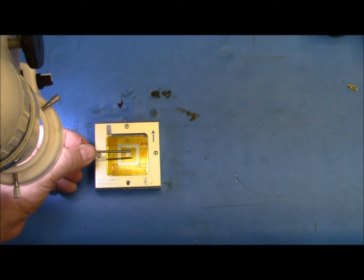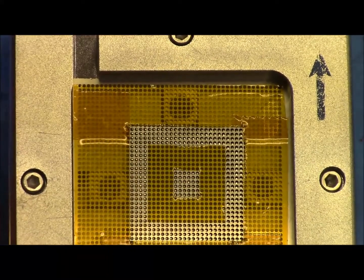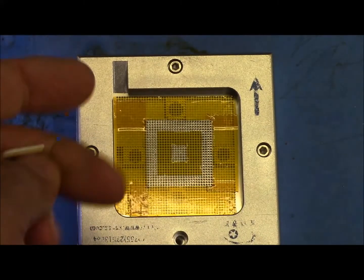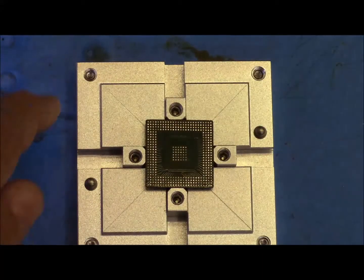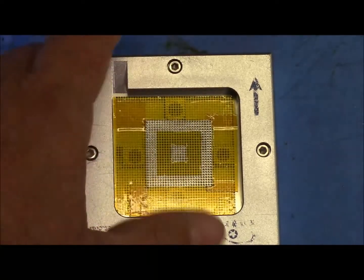So this one here I've already centered the stencil onto the pads of the BGA. All the screws are tight and I've adjusted our four corner screws to have this up just a little bit so it's not touching the chip.